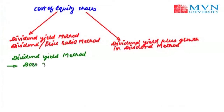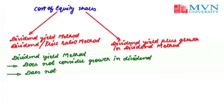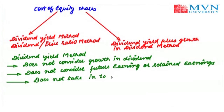This method does not consider growth in the dividend. It also does not consider future earnings or retained earnings. It even does not take into consideration capital gains. According to this method, the cost of equity capital is the discount rate that equates the present value of expected future dividends per share with the net proceeds of the share.